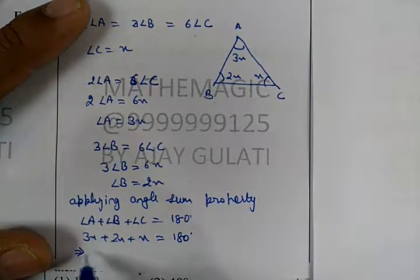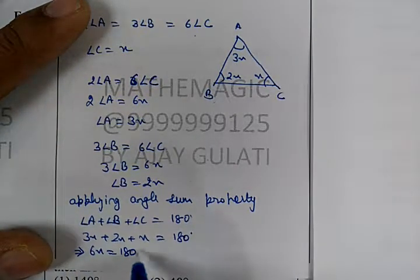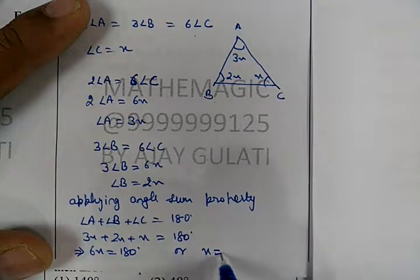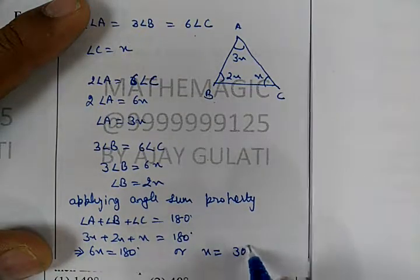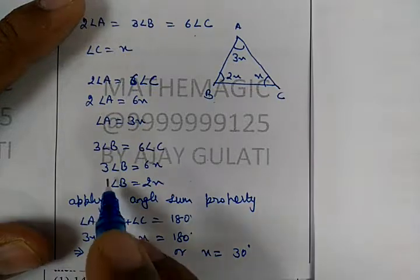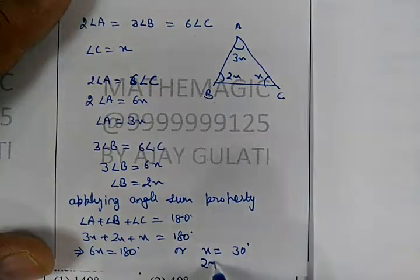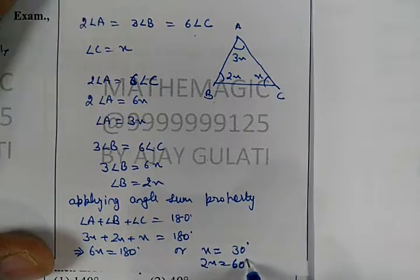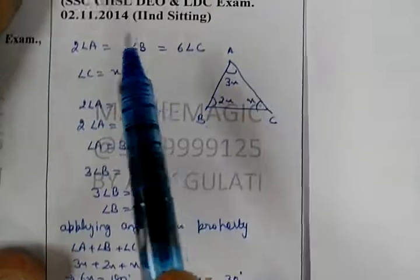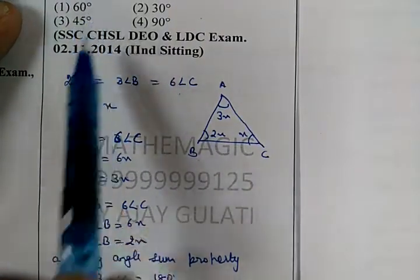Yeah, that's 6X. X equals 30 degrees. The answer is 30 degrees. To do 3X... yeah, 60 degrees. Option number one is the answer.